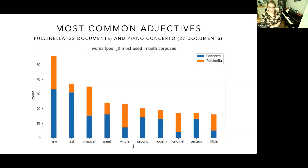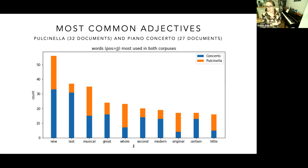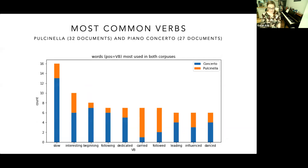We can also learn useful information from the common adjectives list. The concerto receives the word 'new' slightly more often than Pulcinella, but receives the word 'modern' quite a bit more. We can't tell from this graph whether that's a positive or a negative word, but 'modernism' was often associated with busyness for the concerto, and it's something we want to explore more in future analyses. One of the most interesting parts of this graph for me is the word 'little,' which is often associated with Pulcinella. The next step is developing a word windows function where we look at the larger sentences surrounding a word to better understand what it's doing.